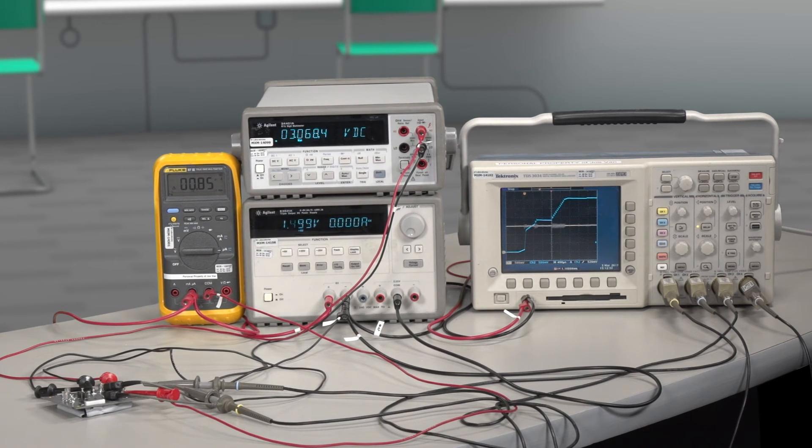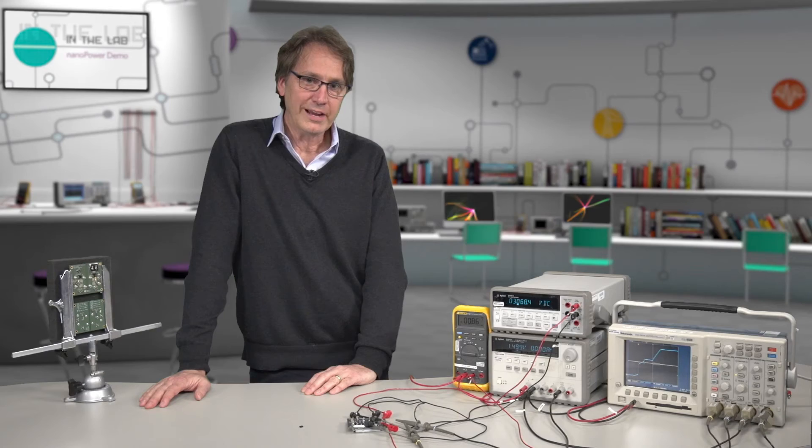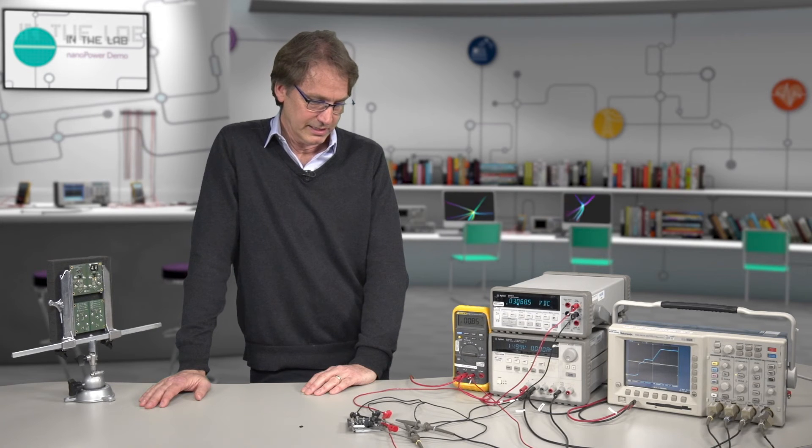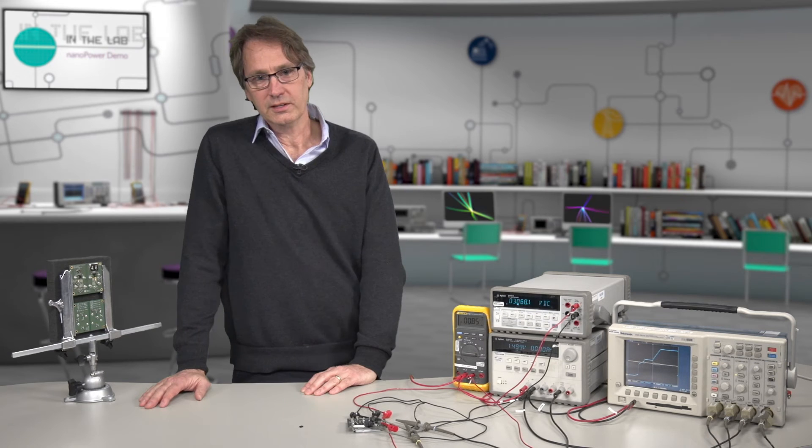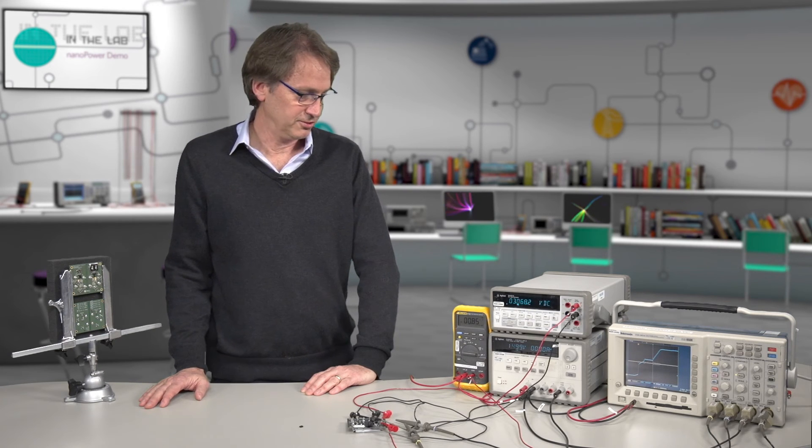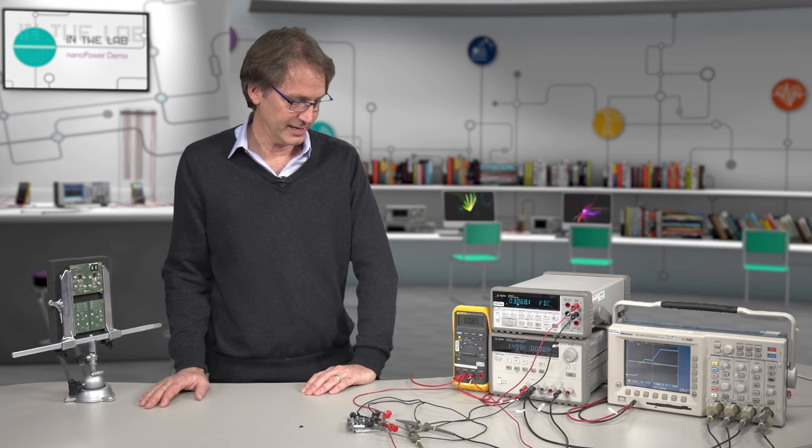And now we see the quiescent current at 850 nanoamps. This is about the right level. The 300 nanoamps that the output actually needs to be boosted from the input. And so there's a 2 to 1 conversion ratio there plus there's an efficiency loss. So this is about the right level.